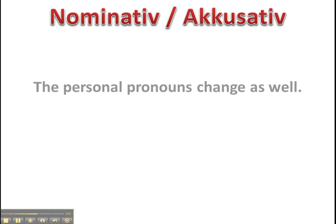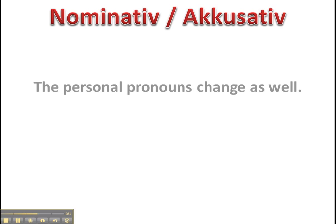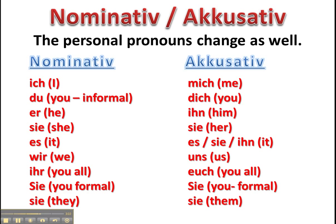The personal pronouns also change between the nominative and the accusative. Nominative or subject pronouns, as they are sometimes called: Ich, Du, Er, Sie, Es, Wir, Ihr, Sie, und Sie. And when they become direct objects, for example: Ich sehe dich, Du siehst mich, ihn for him, sie for her. For 'it', if a word is a masculine noun you can use ihn, or if it's a feminine noun you can refer to it with sie. Or es if you want to be general, uns for us, euch for y'all, und sie und sie.